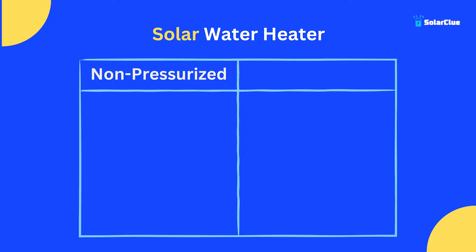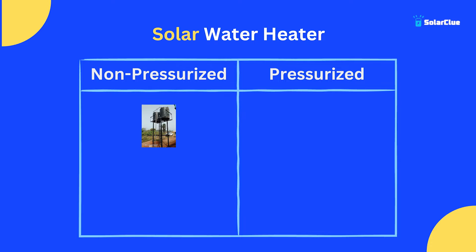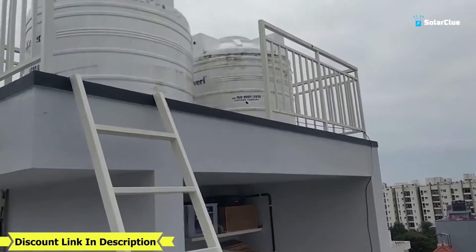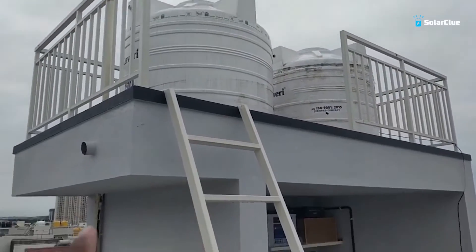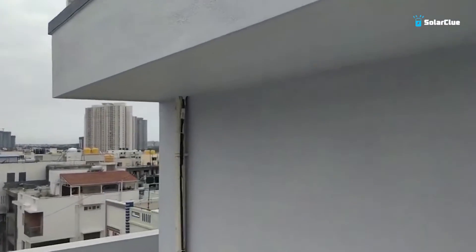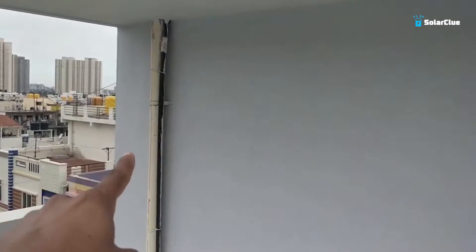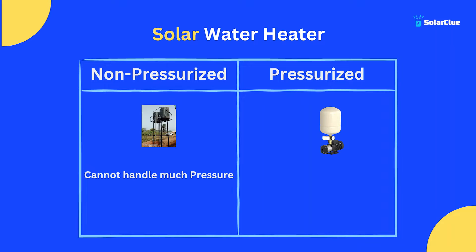Now, after selecting capacity, there are two varieties: non-pressurized and pressurized solar water heaters. This is one of the most confusing parts for normal people. If you place the solar water heater on your terrace, the simple question is: does water come from an overhead tank or from a pressure pump? If there is no pressure pump, water flows from the overhead tank by gravity only, with limited pressure — so you need a non-pressurized water heater.